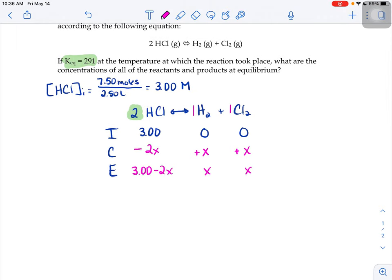Once we get to this point, we can set up an equilibrium expression. So we do products over reactants. I don't have any exponents for my hydrogen and chlorine because they both have ones in the balanced equation, but I do need to square my hydrochloric acid. That 2 in the balanced chemical equation shows up in two places, the change line and as an exponent here. Let's start plugging in everything that we know. We were told that the keq value was 291. And then hydrogen's x, chlorine is also x, and then this guy would be 3 minus 2x squared.